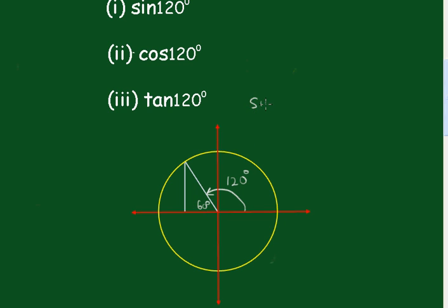So the sine of 120 degrees must be equal to the sine of 60 degrees because we know it's positive there, and of course that's equal to root 3 on 2.